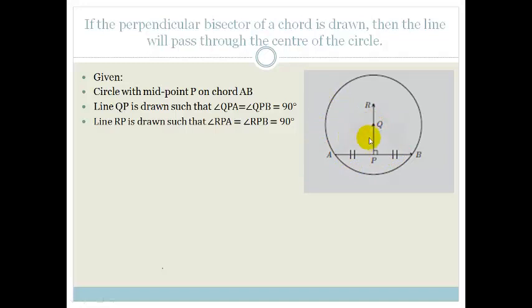Now they're saying, if we have a perpendicular bisector, in other words if this line is perpendicular and the bisector, then it has to go through the center of the circle. And we are given this. You're given a circle with a midpoint P on chord AB, which means that AP equals PB. You're also given your line QP such that angle QPA equals angle QPB equals 90 degrees, and there's also line RP such that angle RPA equals angle RPB equals 90 degrees. And we have to prove that basically this line here goes to the center of the circle.